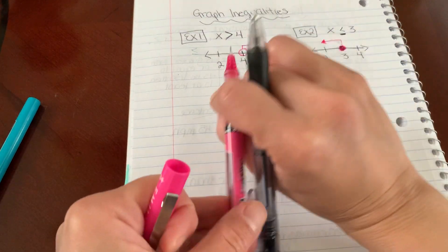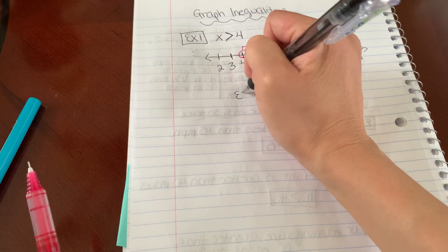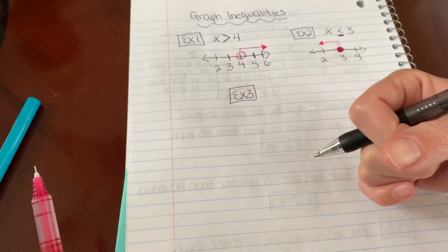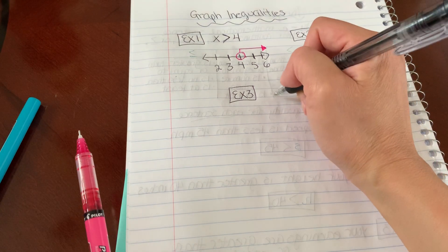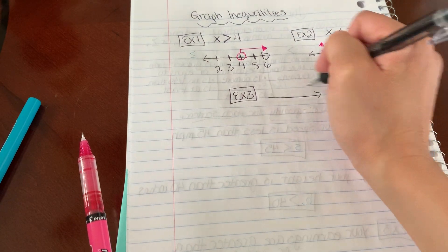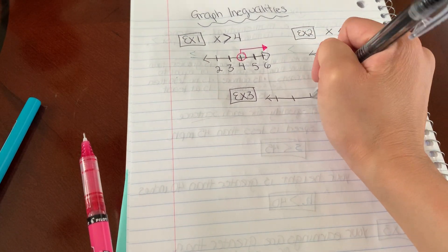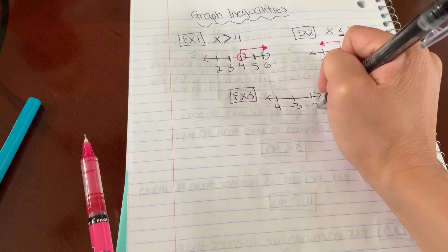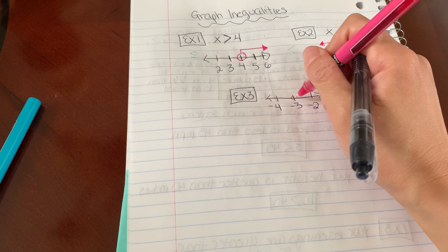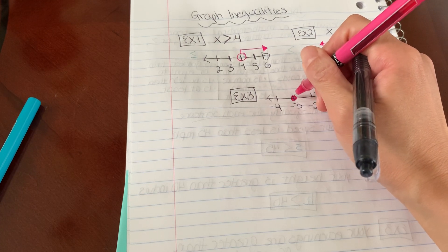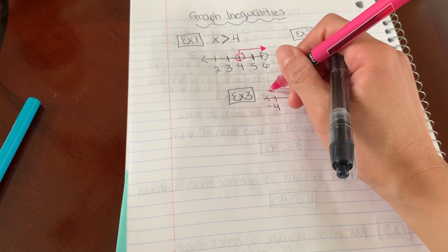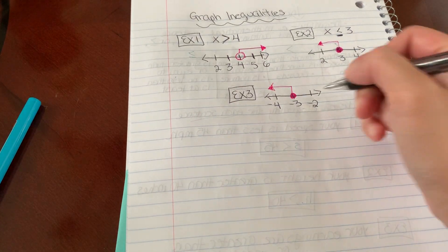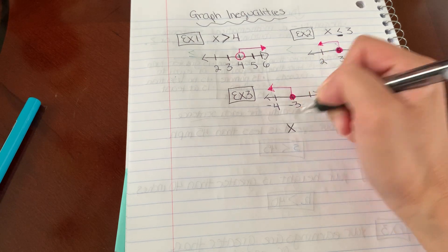So in example three, I'm going to actually draw a number line for you. We're going to go backwards. You tell me what the inequality is. So if I draw a number line like this, and I have negative 4, negative 3, negative 2, 0, closed circle with the line pointing to the left, what do you think my inequality is? So I'm going to pick a variable, X.